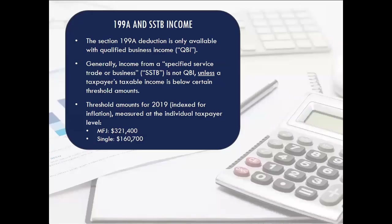For 2019, the phase-out threshold is $321,000 for married filing jointly. If you're below that, you're not impacted by those phase-outs. But if you're above that threshold, you could be limited with the deduction — which is particularly important for specified service trades or businesses such as dental practices.